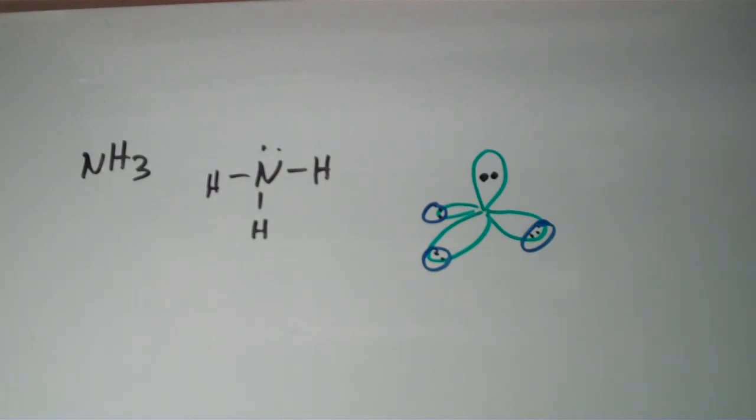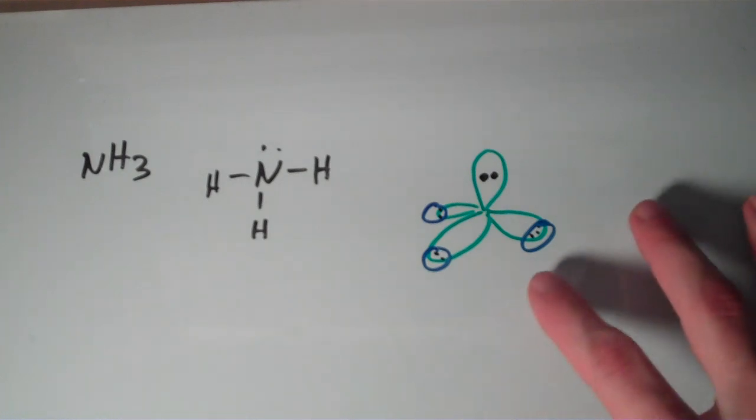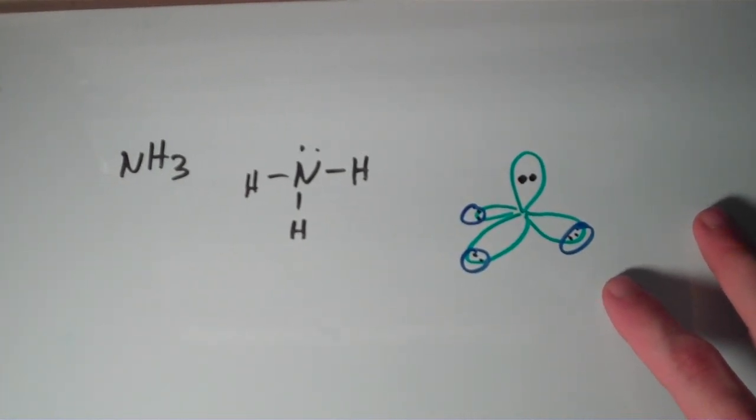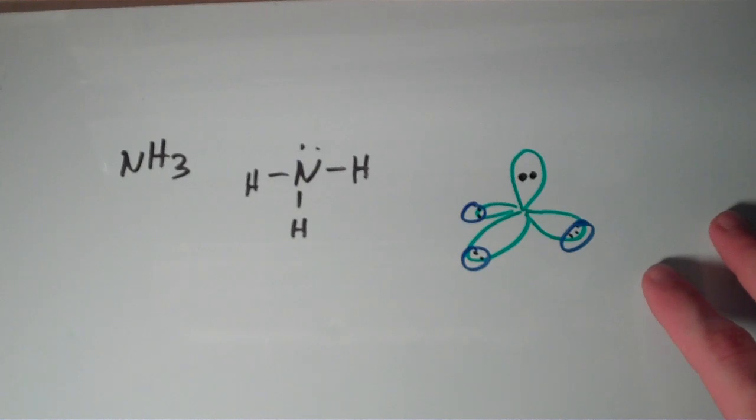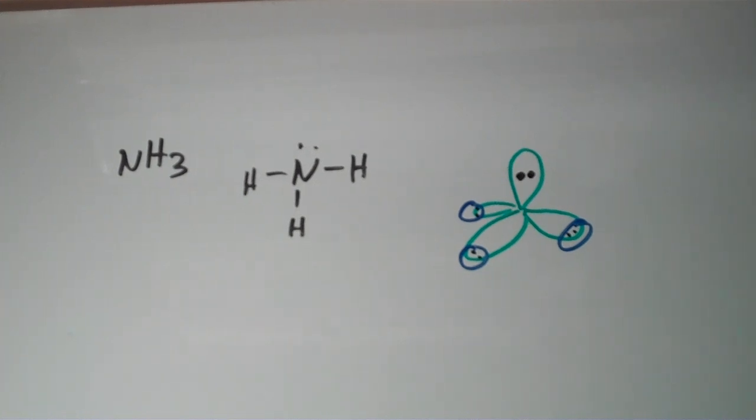The sp3 hybrid orbitals when applied to ammonia is a little bit more of an approximation than when we applied it to methane. And by that I mean that the presence of this lone pair does tend to distort the hybridization a little bit, because of the presence of that lone pair, which tends to repel those electron groups a lot more, it tends to sort of close the umbrellas, is how I like to look at it.